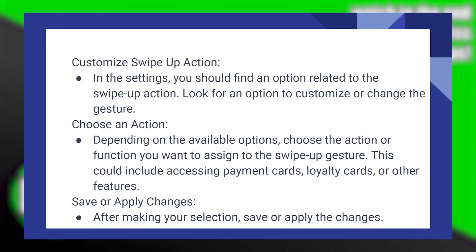Now choose an action. Depending on the available options, choose the action or function you want to assign to the swipe up gesture. This could include accessing payment cards, loyalty cards, or other features. After making your selection, save or apply the changes.